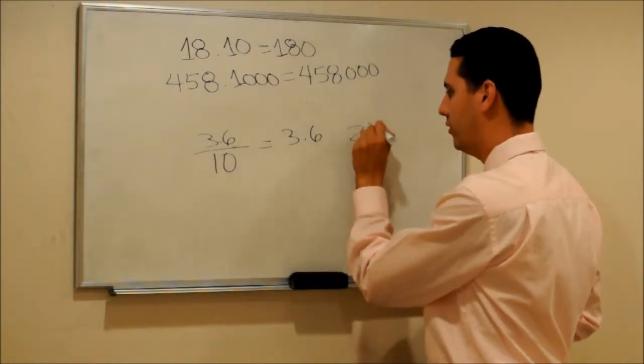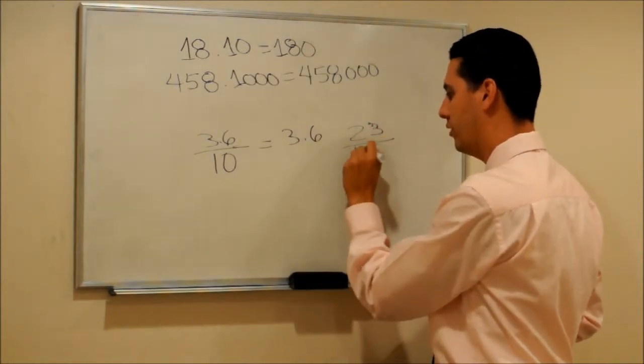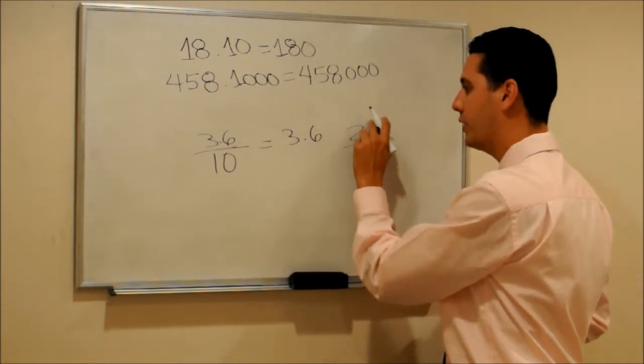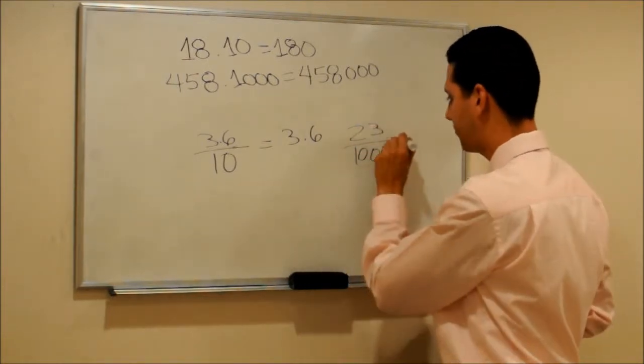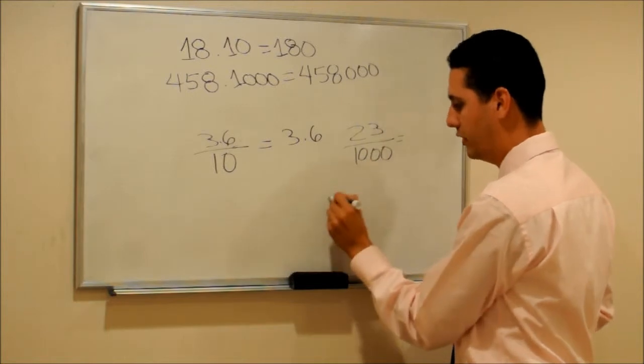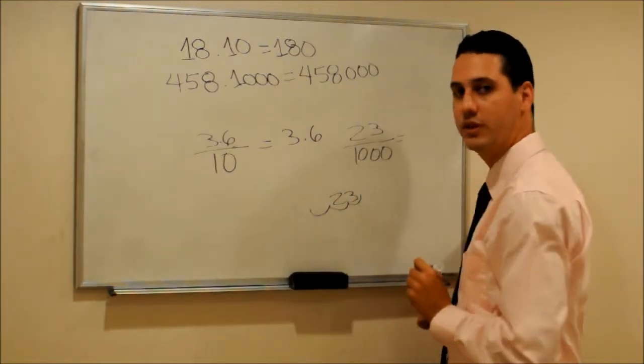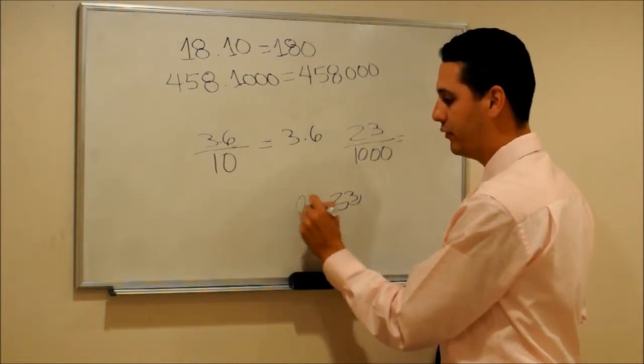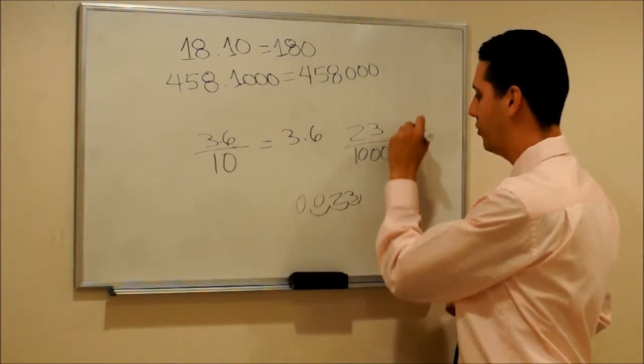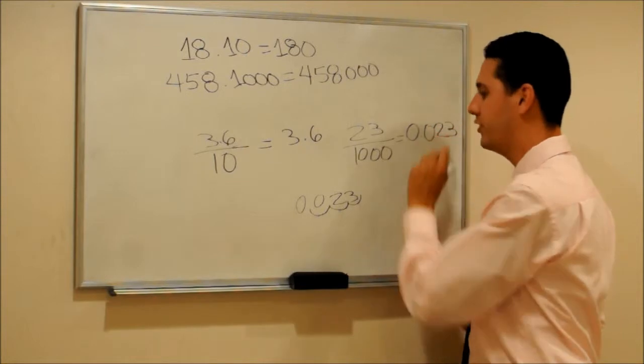What if we want to do 23 divided by 1,000? So the answer would be 23. We have to move 3 places to the left and we have to fill the rest with zeros. So the answer would be 0.023.